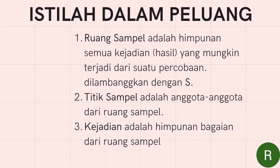Yang pertama ada ruang sampel. Ruang sampel adalah himpunan semua kejadian yang mungkin terjadi dari suatu percobaan. Ruang sampel ini kita simbolkan dengan huruf S besar. Kemudian ada titik sampel. Titik sampel adalah anggota-anggota dari ruang sampel. Dan yang selanjutnya ada kejadian. Kejadian adalah himpunan bagian dari ruang sampel.